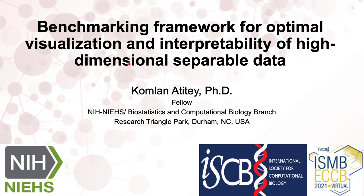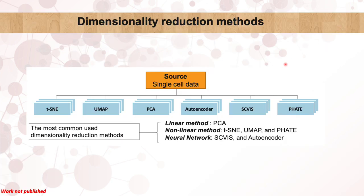Today, I will talk about the benchmarking framework for optimal visualization and the interpretability of high-dimensional separable data. Visualization is an important tool for generating meaning from scientific data, but the visualization of structures in high-dimensional data presents challenges. Dimension reduction methods are key in solving this challenge, but these methods can be misleading, especially when apparent clustering in the dimension-reducing representation is used as the basis for reasoning about relationships within the data. Through the review of 24 dimension-reducing methods, we selected the most commonly used ones to evaluate the computational framework presented in this work.